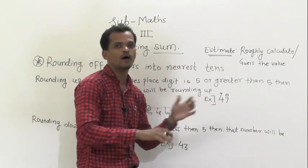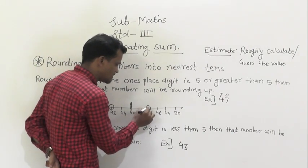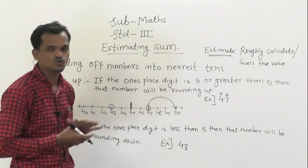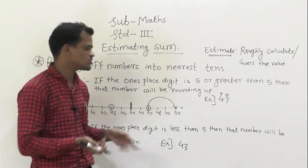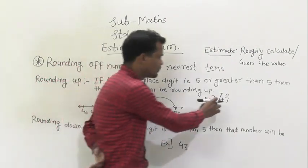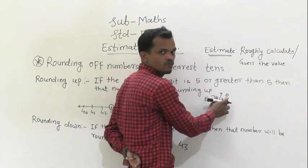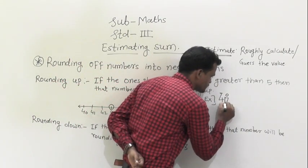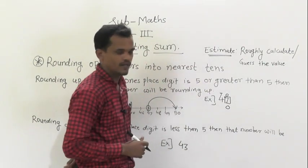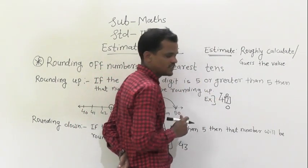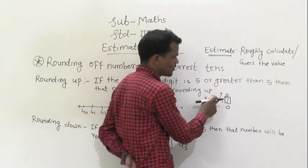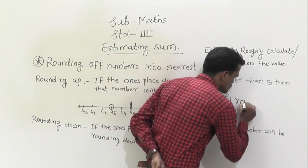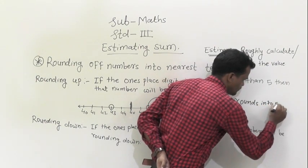Since 7 is greater than 5, 47 will be rounded up. On the number line, 47 is nearest to 50, so 47 rounds up to 50. To do this: write 0 at the one's place, and add 1 to the ten's place digit. Here, 4 is at the ten's place, so 4 plus 1 equals 5, giving us 50.